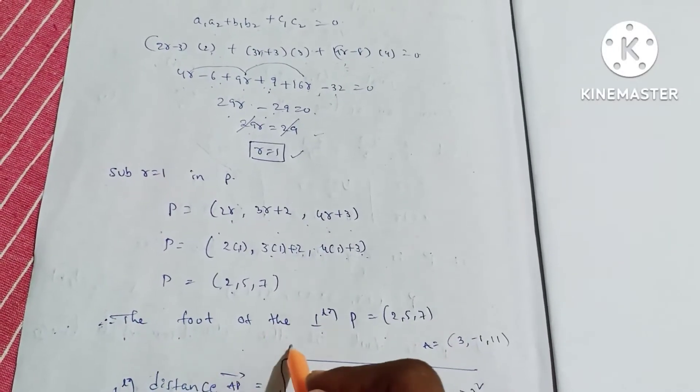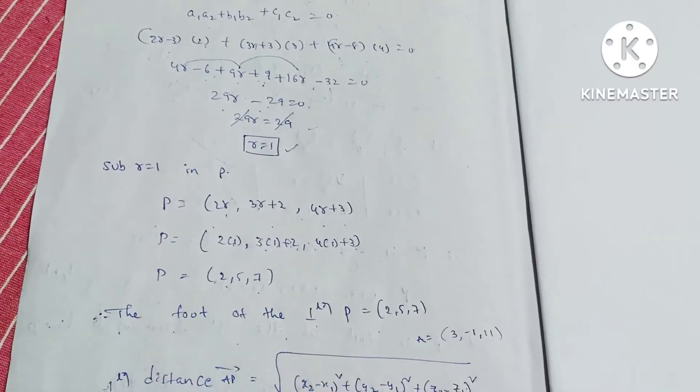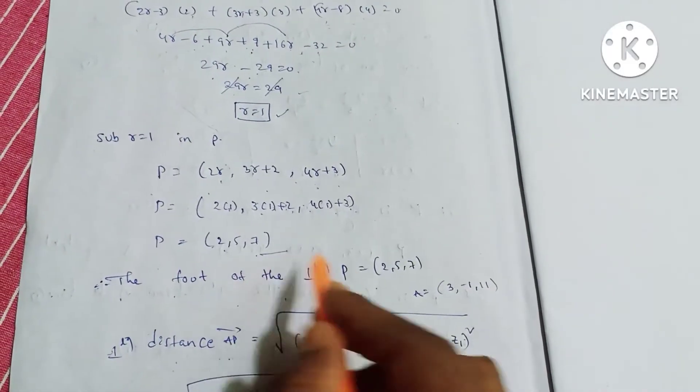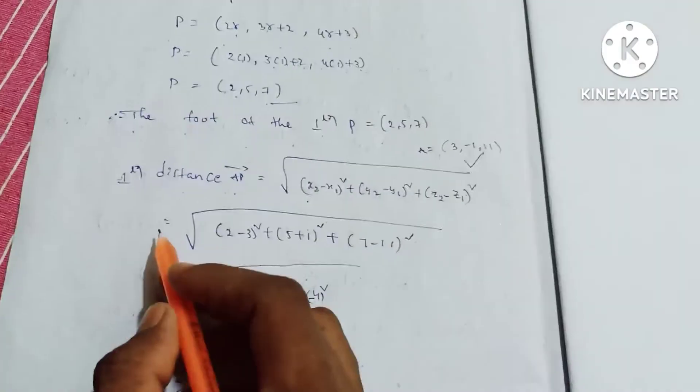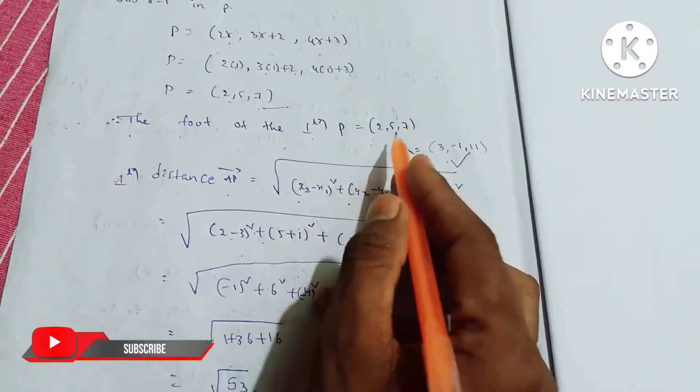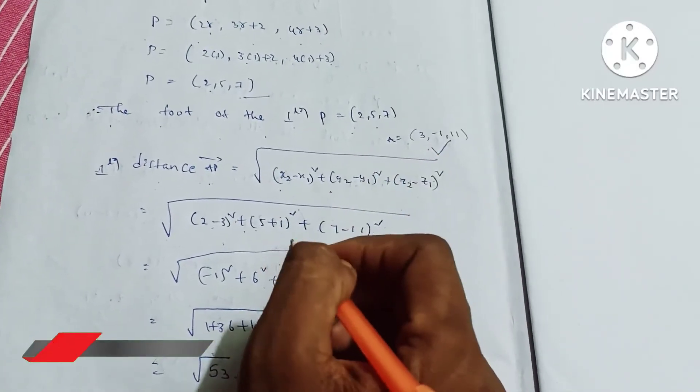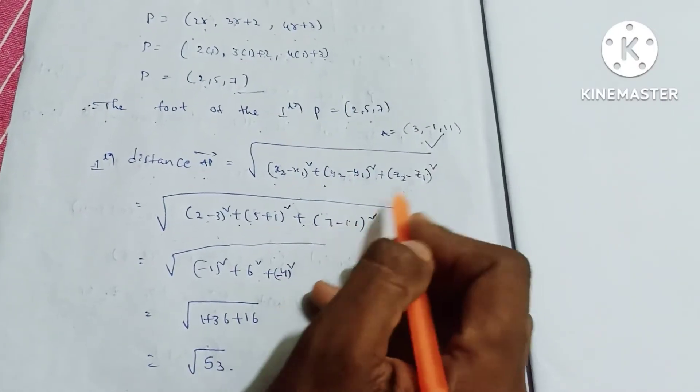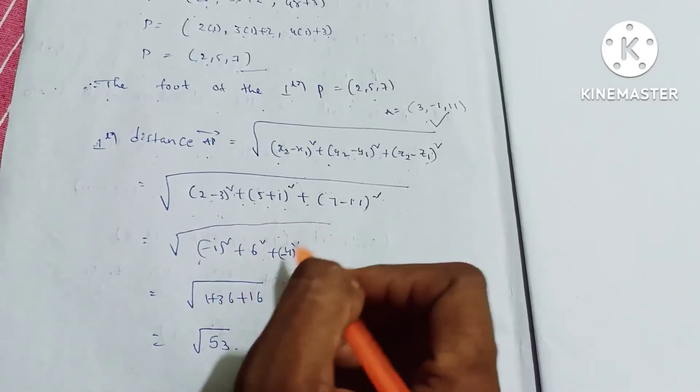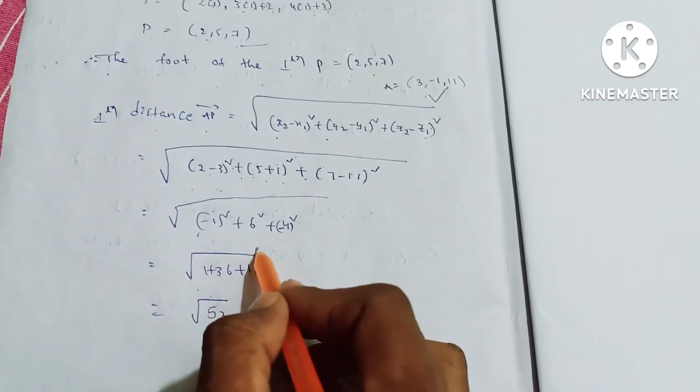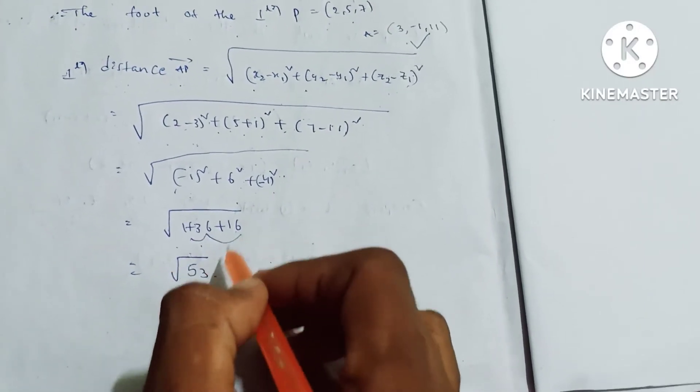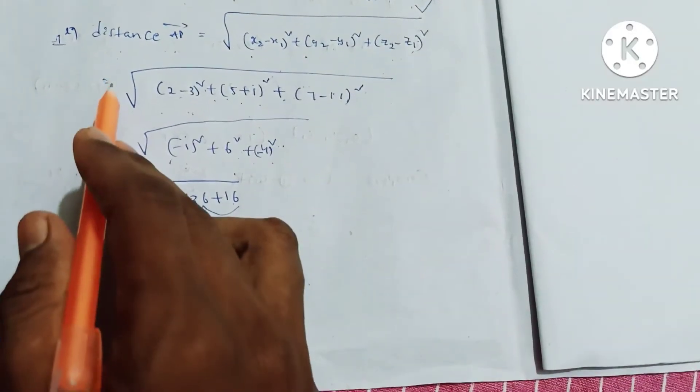We have the foot of the perpendicular. The question also asks for perpendicular distance. The perpendicular distance AP equals √[(x2-x1)² + (y2-y1)² + (z2-z1)²] = √[(2-3)² + (5-(-1))² + (7-11)²] = √[(-1)² + (6)² + (-4)²] = √[1+36+16] = √53. Therefore, the perpendicular distance AP is √53.